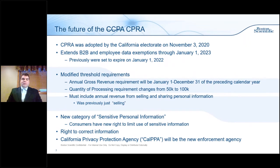Now we'll look at the future of the CCPA — transitioning more to the CPRA, which was passed on November 3rd. This is likely to form the future of any developments in the law and will likely impact existing amendments whose comment period ended in late October, currently under review by the legislature and the California Attorney General's office. It's important to keep an eye on the California legislative process and any impacts that Proposition 24's passage has on updates and amendments to the CCPA.